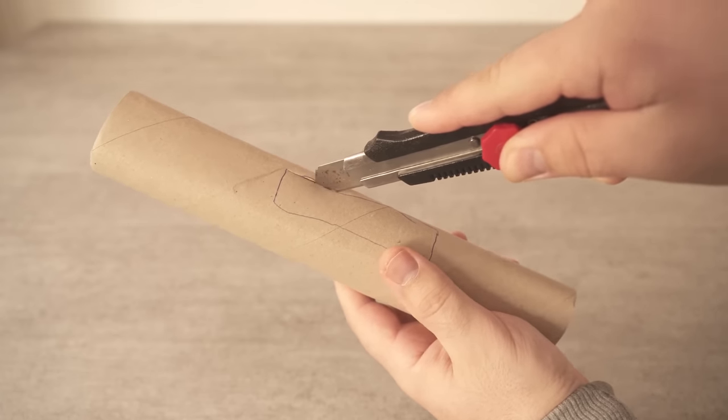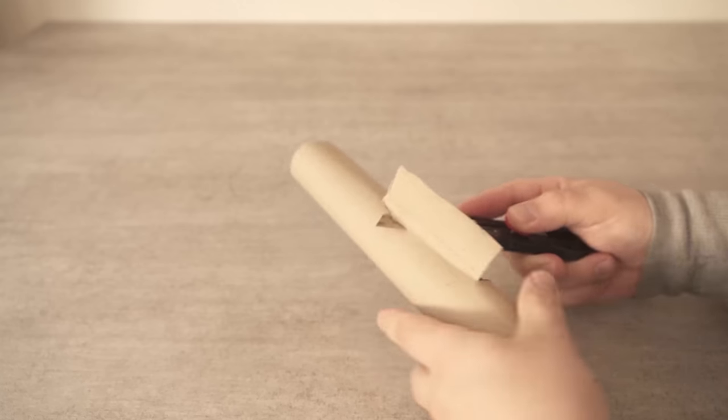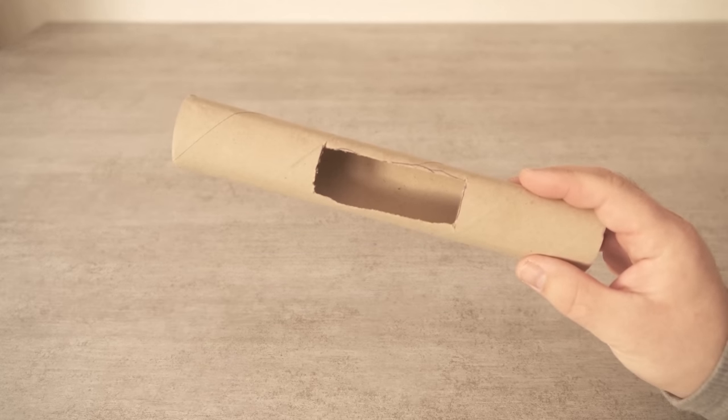I have cut out a piece like this. In the end, the household roll looks like this now. Now we can use our trick with it.